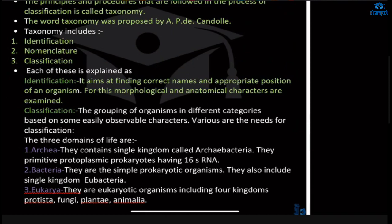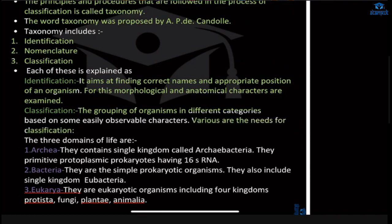Classification includes the grouping of organisms into different categories — for example, all long plants will be put in one category. Various needs exist for classification. The needs are basically the morphological characters, anatomical characters, biochemistry, and lifestyles — everything is studied for classification.